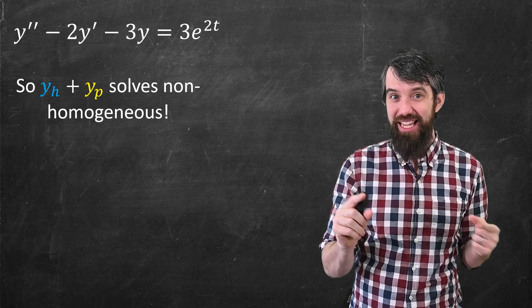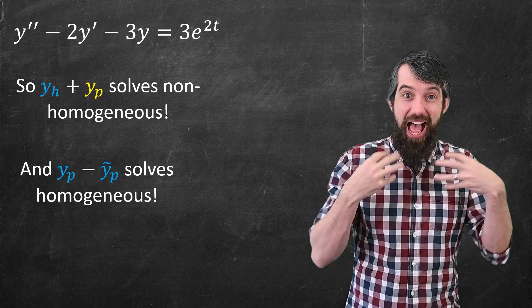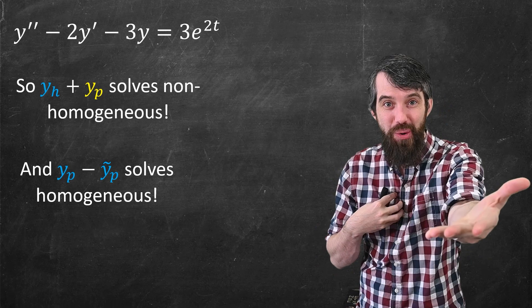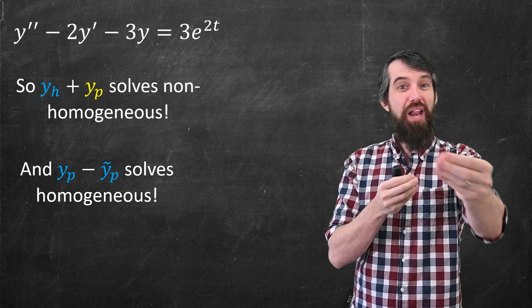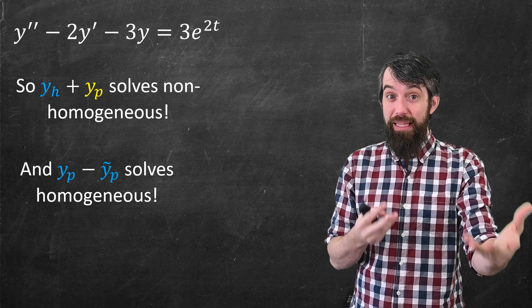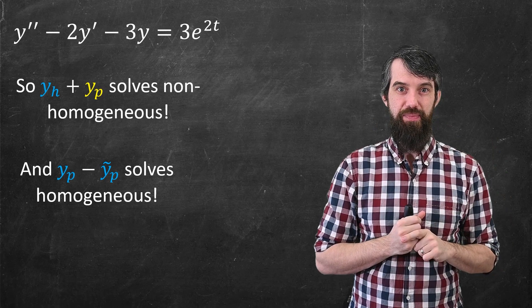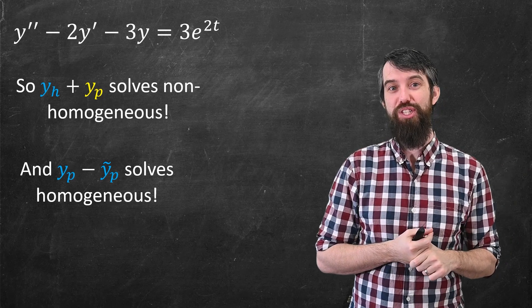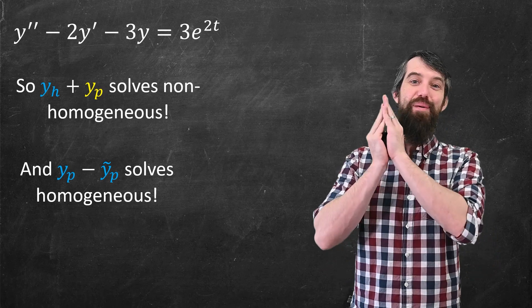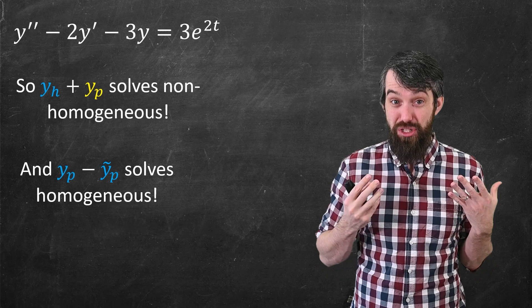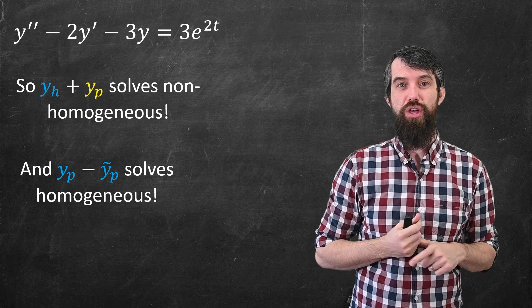I can do the same thing with a slight twist. Imagine there are two different particular solutions: I have y sub p, and you have y tilde sub p. How much can you and I disagree? We can disagree a little bit, but the difference between our two solutions is a solution to the homogeneous. You could prove this by plugging it in — you'd get 3e to the 2t minus 3e to the 2t, which is zero. So you and I can disagree only by a solution to the homogeneous.